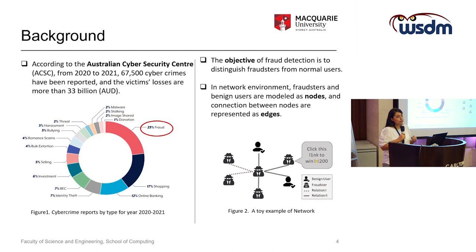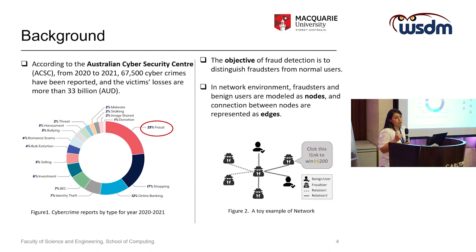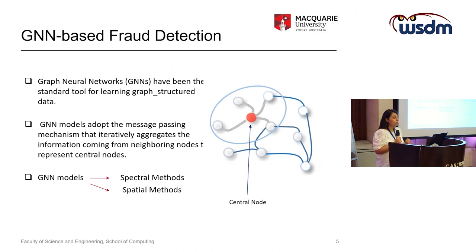In this regard, many graph-based approaches have been proposed. In a graph setting, both benign users and fraudsters can be represented as nodes, and connections between nodes can be represented as edges. The objective of fraud detection systems is to distinguish fraudsters from normal users. Recently, graph neural network models have achieved great success in the literature and have become a very powerful tool for graph learning.